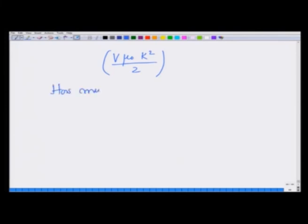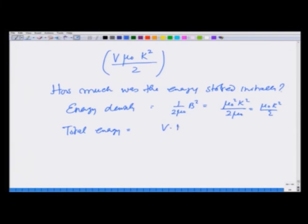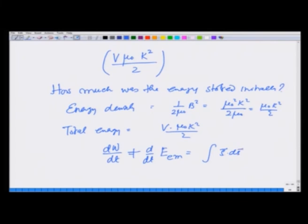The energy initially stored in the magnetic field is (1/2μ₀) × B² × V = μ₀²k²/(2μ₀) × V = Vμ₀k²/2. So the total energy in volume V was Vμ₀k²/2, which has now flowed out through the surface via the Poynting vector. This confirms the energy balance: dW/dt + d(E_em)/dt = ∮S·dS is satisfied again — here dW/dt = 0 and the electromagnetic energy flows out via the Poynting vector.